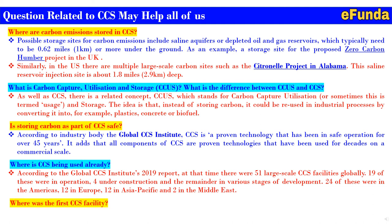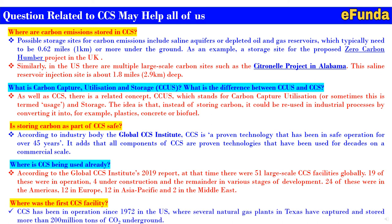Fifth question: where was the first CCS facility built? CCS has been in operation since 1972 in the United States, where several natural gas plants in Texas have captured and stored more than 200 million tons of CO2 underground. This concludes the fundamentals of CCS and the typical related questions.